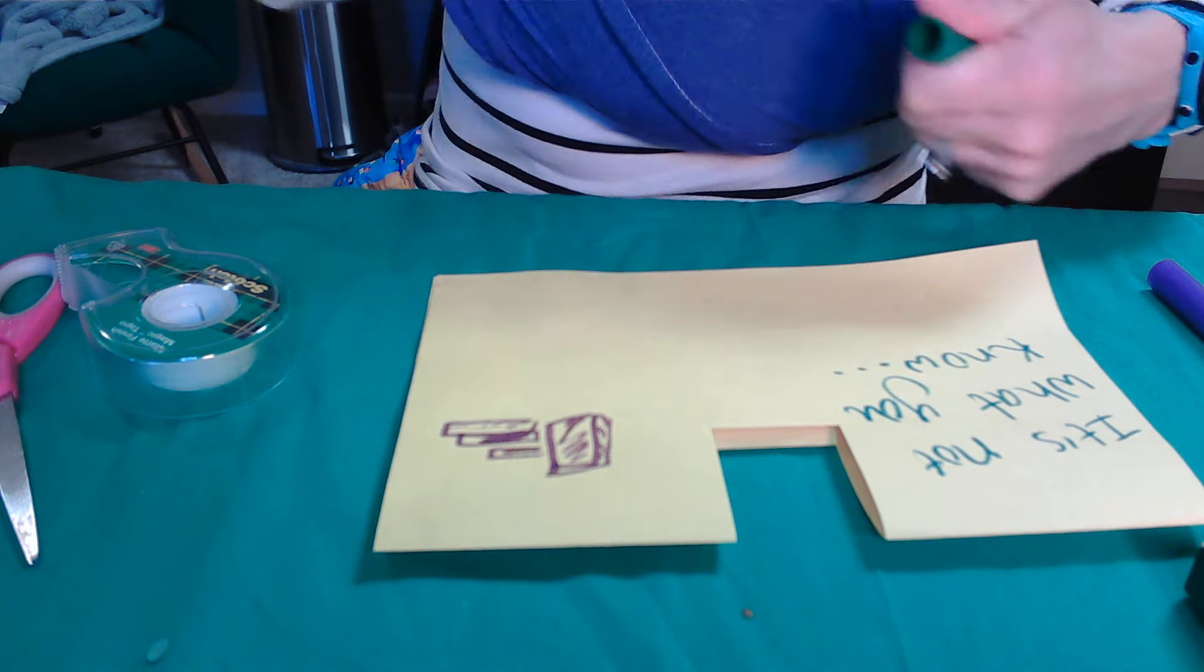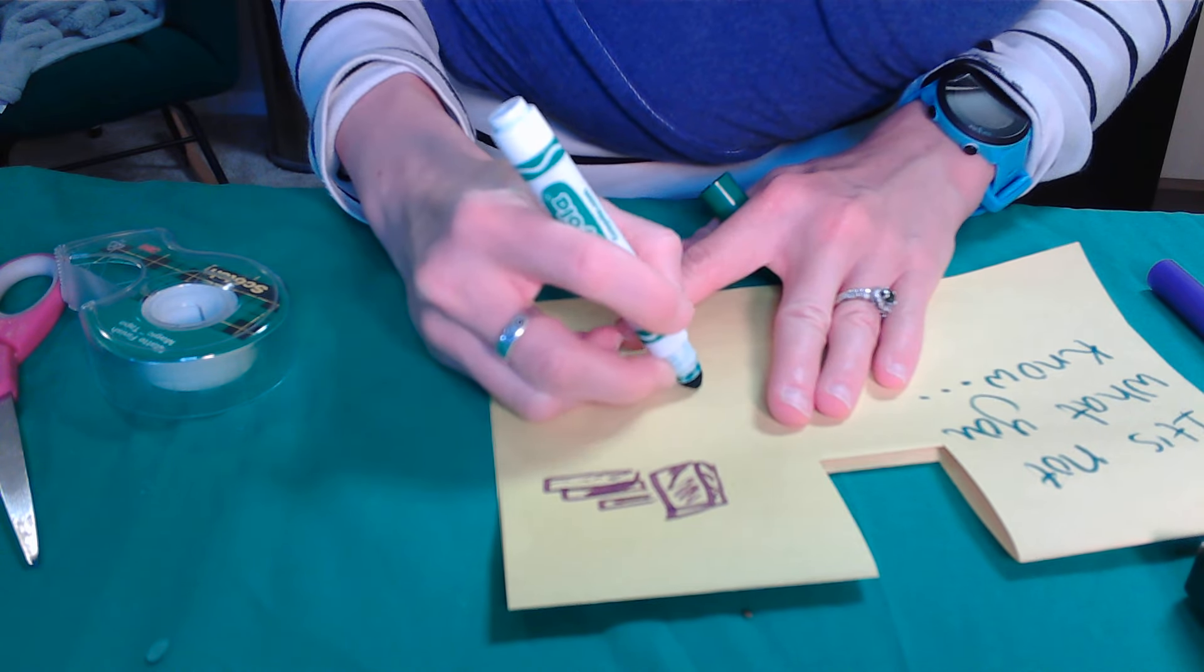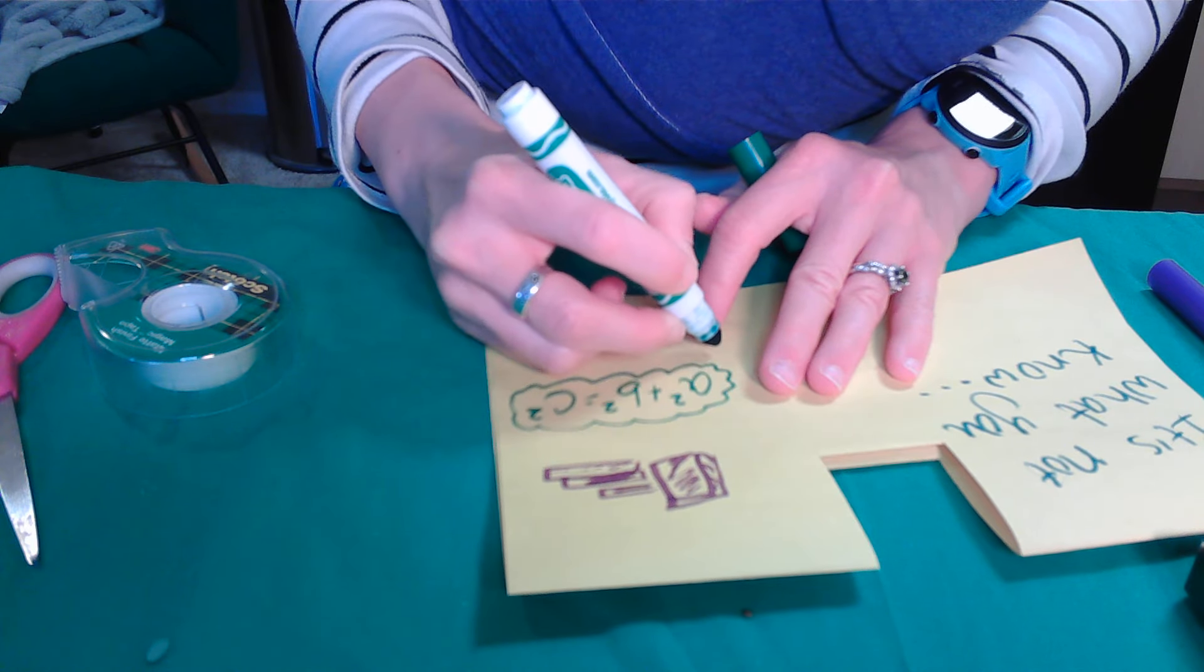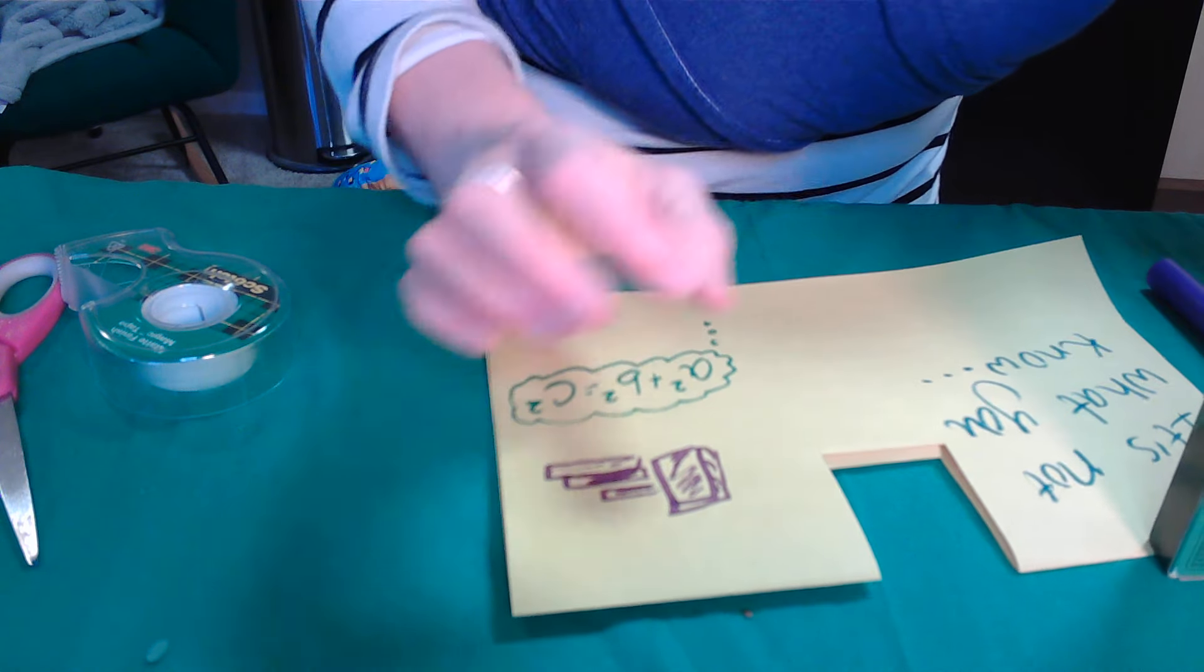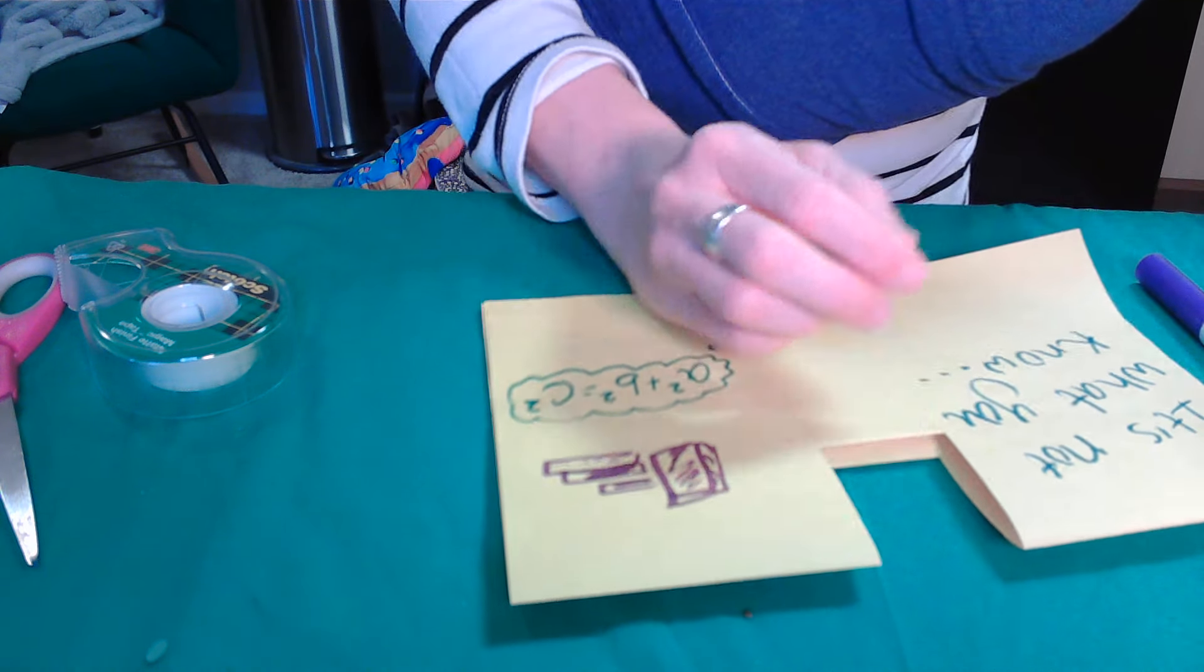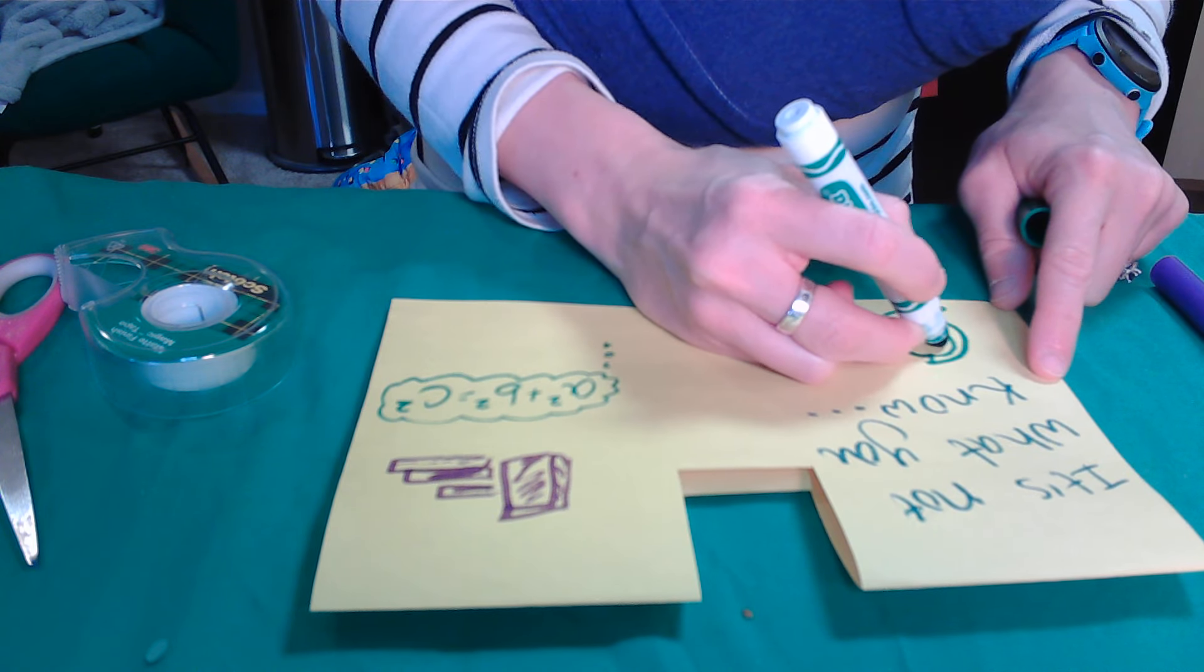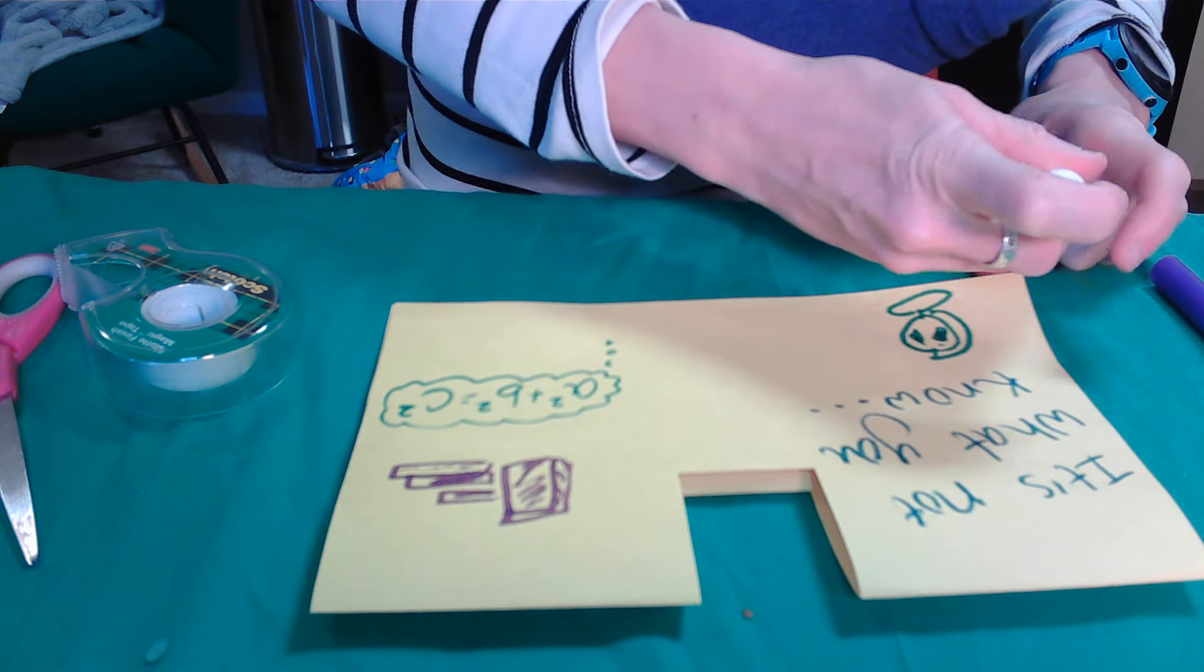Over here we're going to have a math equation. We're going to say something like, let's see here, I don't know, a squared plus b squared equals c squared. If you're into higher math, some higher, just kind of some, demonstrating that these are facts, things that you might know, facts that you might know.